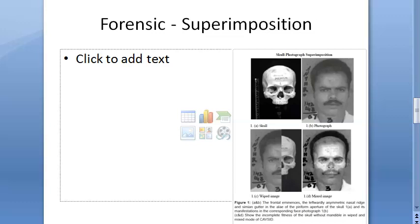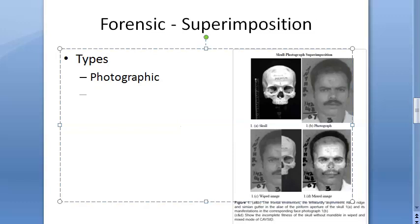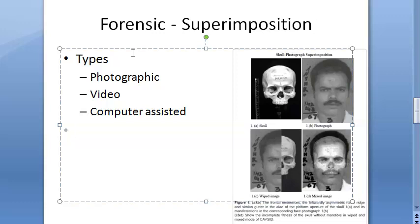Superimposition is a technique applied to determine whether a skull belongs to a specific person in a photograph. You have a picture and a skull — the person is dead — and you want to identify if the skull belongs to that person. There are three types: photographic, video, and computer-assisted superimposition.